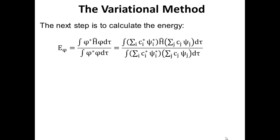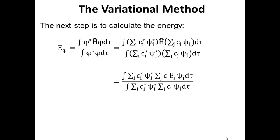The next step in the variational method is to calculate the energy. We go back to our expression with a numerator and denominator, and we replace the trial function with the sum of the functions that are actual solutions to the Schrodinger equation, each times some coefficient c_i. Plugging in directly gives something that looks messy, but the Hamiltonian operator acting on functions that are actual solutions is simply an eigenvalue equation: when H acts on psi_j, we return the energy E_j for the j-th state times the wave function psi_j.